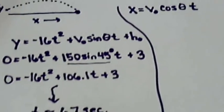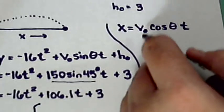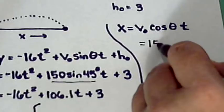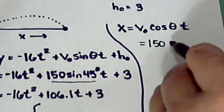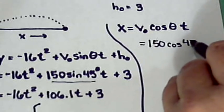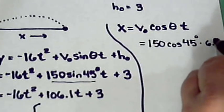And now that we have that time we can come back up here to our X which is what we wanted and solve for that. Our initial velocity is 150 cosine of 45 degrees and now we know our time is about 6.7 seconds.